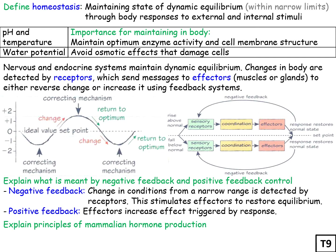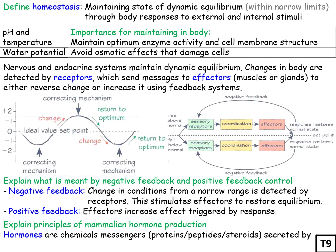Explaining the principles of mammalian hormone production - hormones are chemical messengers. They can be proteins or peptides, which are shorter than polypeptides, roughly less than 20 amino acids in length. Hormones can also be steroids, which are made of lipids. They are secreted by endocrine glands and transported by the blood to the target organs where they make changes.